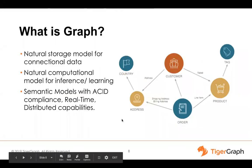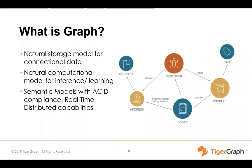Now let's get onto the technology part — at least the abstraction of the technology. What is a graph? In very basic terms, a graph is a natural storage model for connected data. It's a natural computational model for inferencing and learning — a semantic model with ACID compliance and real-time distributed capability. If you look at the right-hand side of your screen, you see circles and lines in between those. These circles are called nodes, and the lines are called edges.